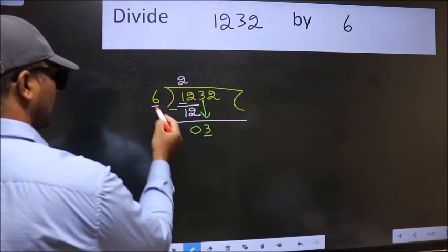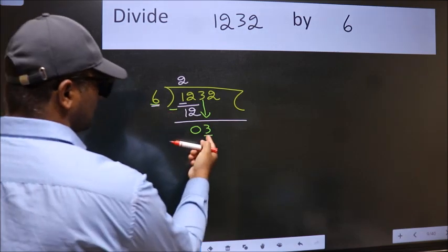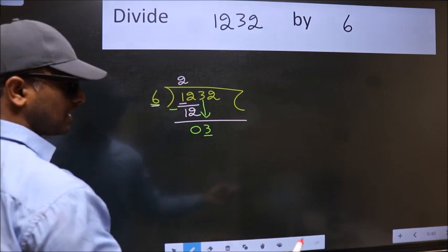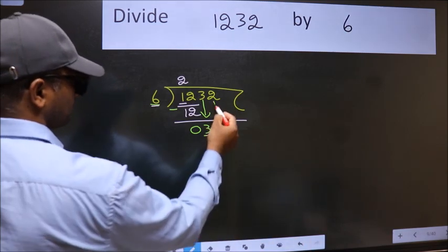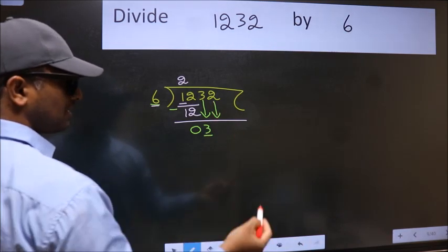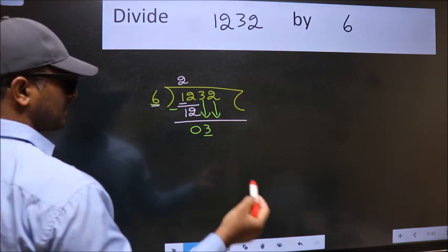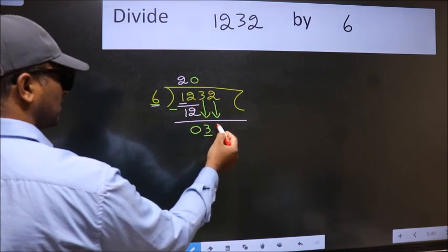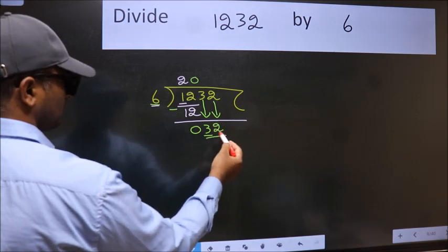Here we have 3 and here 6. 3 is smaller than 6. So we should bring down the second number. And the rule to bring down second number is put 0 here. Then only we can bring this number down. So, 32.